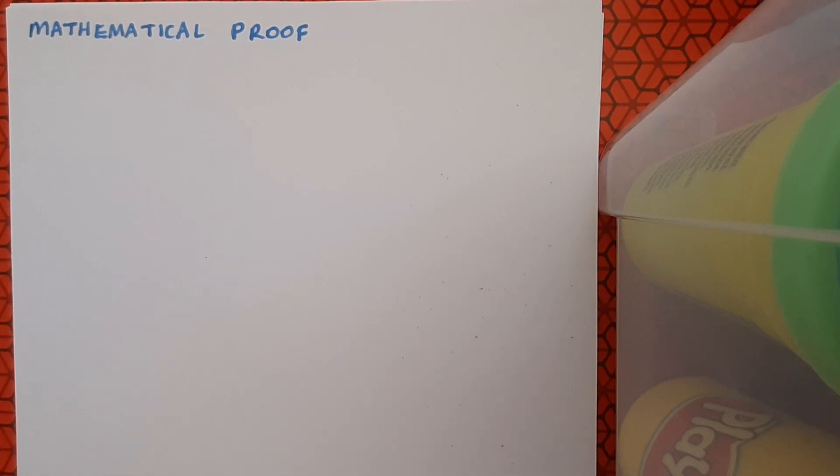This is a video on mathematical proof. In maths, when we talk about proof, we talk about using a series of logical steps to come to a conclusion that we can absolutely definitely stand over. We want to use proof to test the truthfulness or otherwise of a statement, and we don't want to have any doubt left at the end. There are a number of different ways that we can go about mathematical proof.